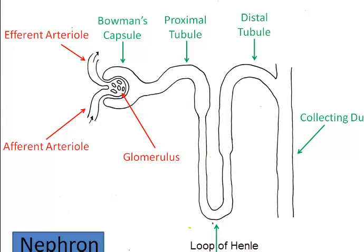For the sake of simplicity, the peritubular capillaries that surround the kidney tubules will not be shown, so that we can concentrate on the kidney tubules themselves. Blood vessels we can see in this image include the afferent arteriole, which delivers blood into the glomerulus under high pressure; the glomerulus, a network of capillaries where pressure filtration takes place; and the efferent arteriole, which takes blood out of the glomerulus and becomes the peritubular capillary network. The nephron tubules shown in green include the Bowman's capsule, which captures the filtrate as it leaves the glomerulus, the proximal tubule, loop of Henle, distal tubule, and collecting ducts, which are responsible for reabsorption of materials back into the blood and concentration of urine.